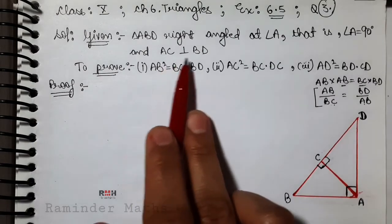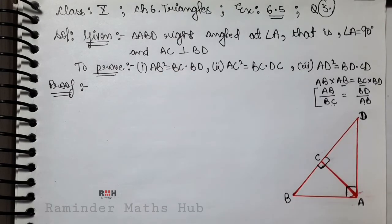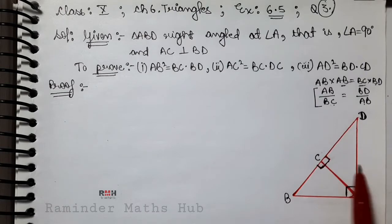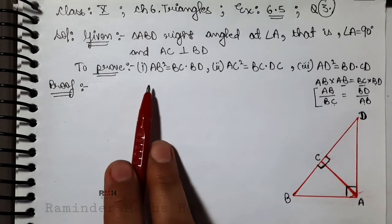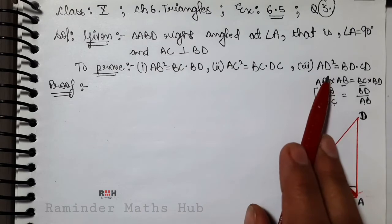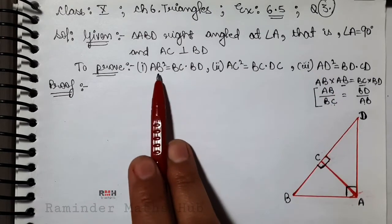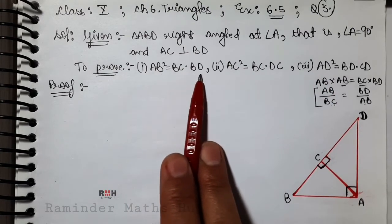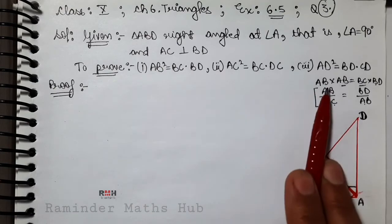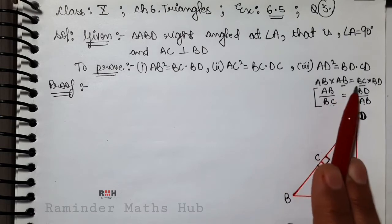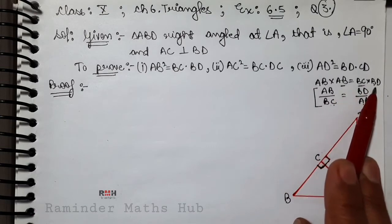AC perpendicular to BD given था, और perpendicular का meaning होता है कि दोनों sides पर 90-90 का angle बनाएगा। हमें जो prove करना है वो तीनों parts हमने लिख दिये। First part में AB² = BC·BD prove करना है, तो AB² को AB·AB लिख देते हैं, और इसे BC·BD के equal prove करना है।